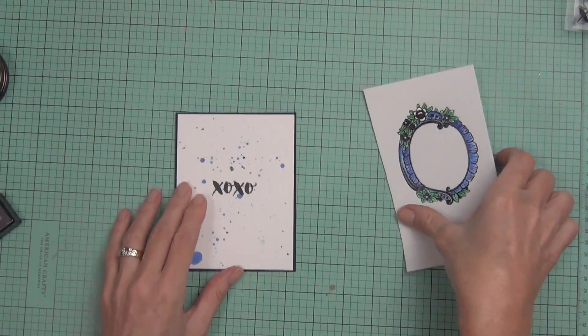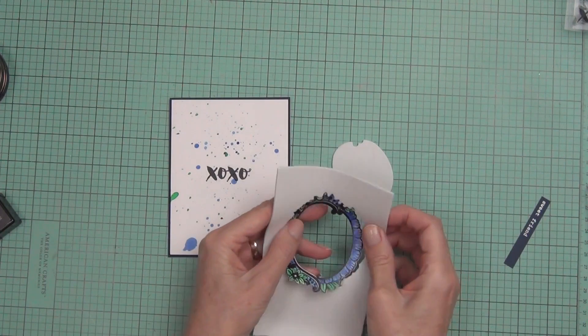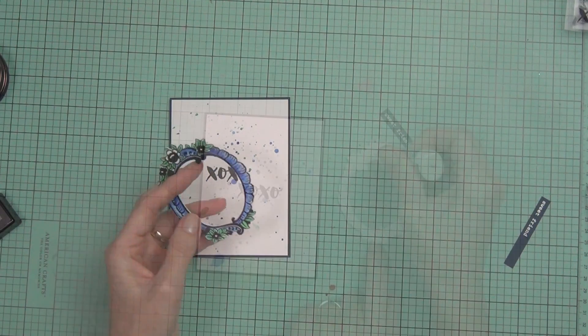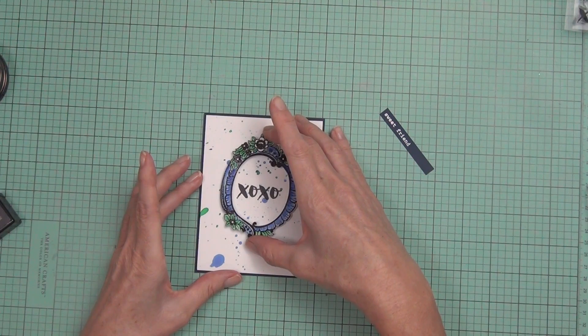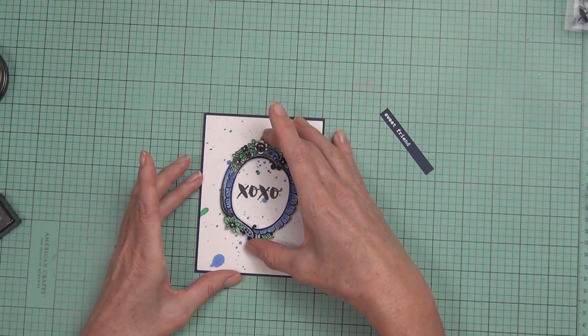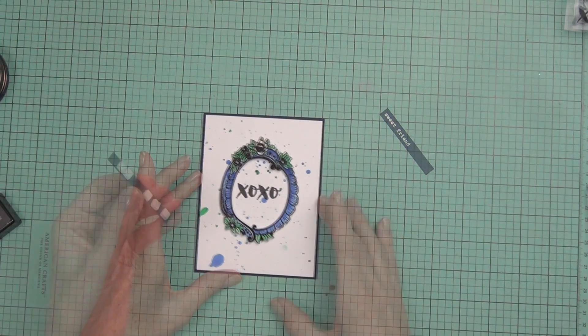I simply just pop that up on the front of my top fold card with some fun foam behind it to give it a bit more dimension. With the frame, I also adhered that with the matte medium, and then I just used some foam squares to pop up my Sweet Friend sentiment.